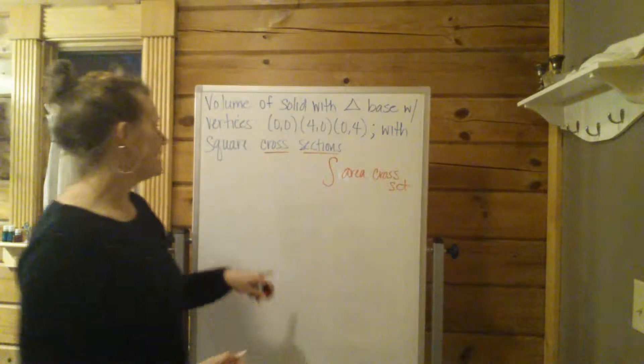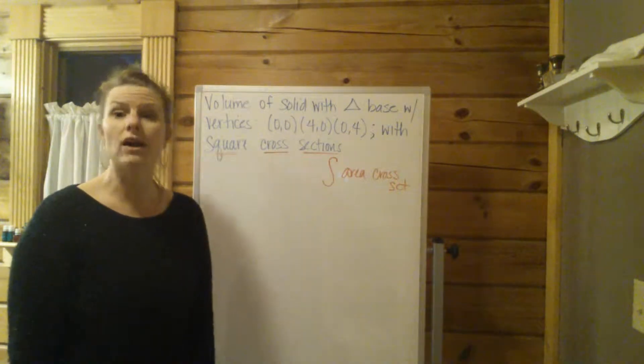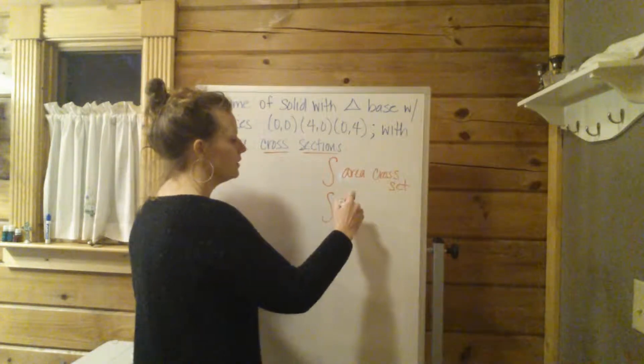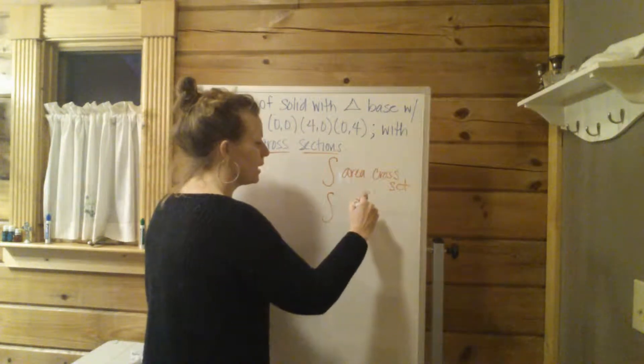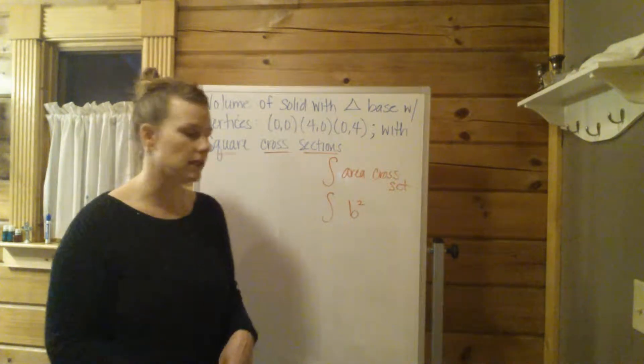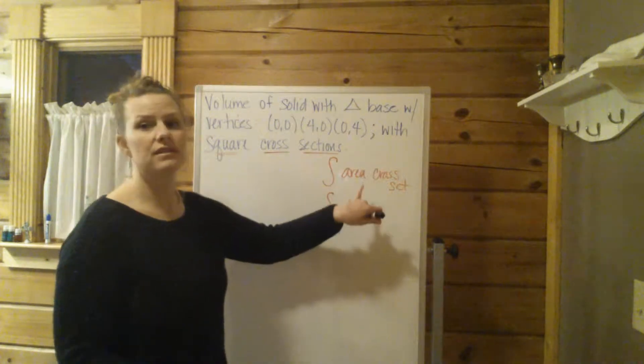Okay, so in this case, what kind of cross sections do we have? We have square cross sections. So we're going to say the integral of, let's say, b squared. Okay, is the area of a square, the base squared, length times width, basically. So we know we're going to have an integral of the base squared.